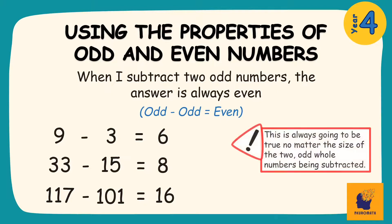Like before, this condition is always going to be true no matter the size of the two odd whole numbers being subtracted. So, even if I'm subtracting a 3-digit odd whole number from a 6-digit odd whole number, my answer will still be an even whole number.